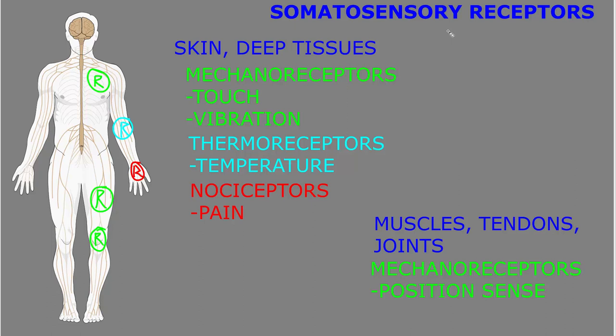These are called the primary modalities of somatosensation, and by that we just mean the types of somatosensation. There are different somatosensory receptors in the skin and deep tissues for different somatosensory stimuli.